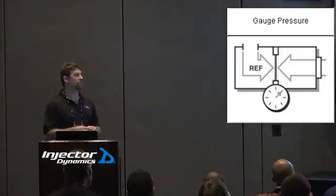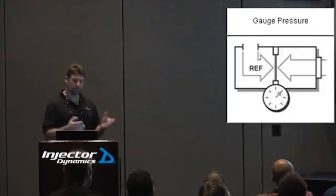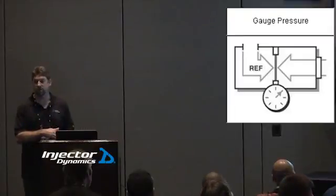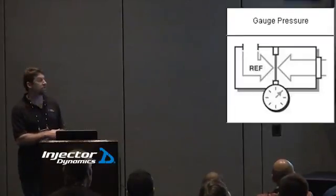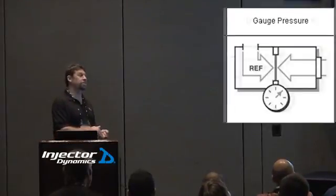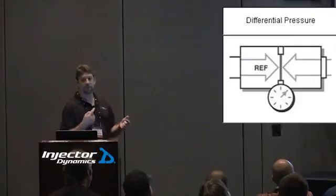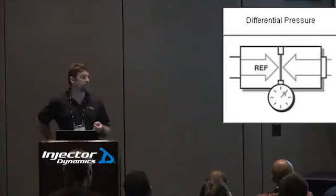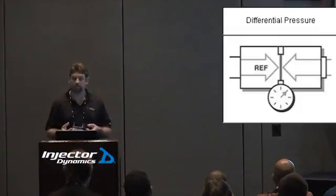Now, the third one is the one that seems to confuse people. Finally, it's just as simple as the others. It's important to understand that this is what the injectors see and what the injectors consider. That is differential pressure, which is the difference simply between two points that are being measured. In the case of a fuel injector, those two points are the fuel pressure on the rail and whatever the pressure is in the intake manifold.